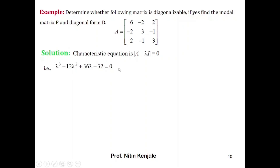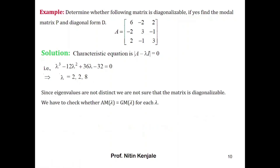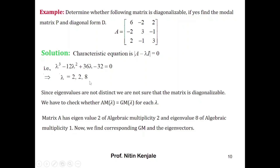Using a calculator, we solve the characteristic equation to find the eigenvalues. If eigenvalues are distinct we can conclude diagonalizability directly; if not, we must check algebraic and geometric multiplicities. Solving, we find eigenvalues 2, 2, and 8. Since they are not all distinct, we compute multiplicities. Algebraic multiplicity of eigenvalue 2 is 2, and algebraic multiplicity of eigenvalue 8 is 1.